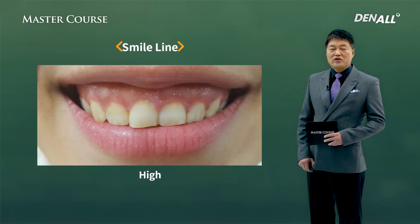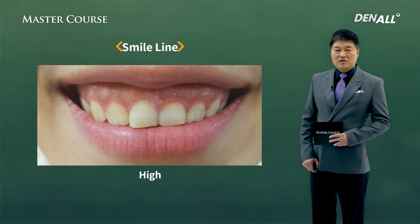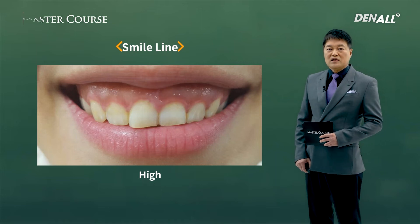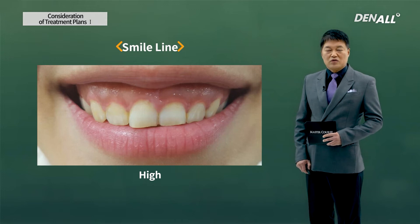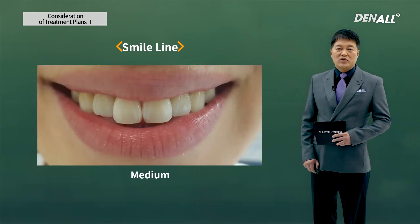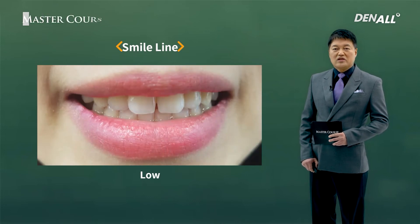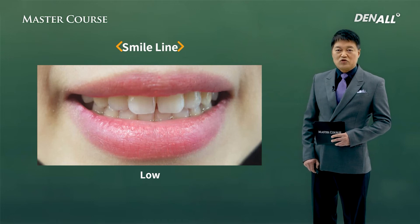Next is evaluating the smile line. In the anterior region, if there is a high smile line, you can get a lot of stress, and if you make the smallest mistake it can affect aesthetics very severely. If it is medium or low, even if it is in the aesthetic region, we may have a little less stress and can place the implant with more confidence.